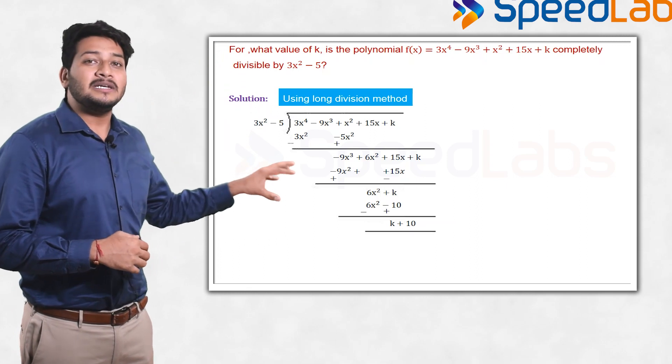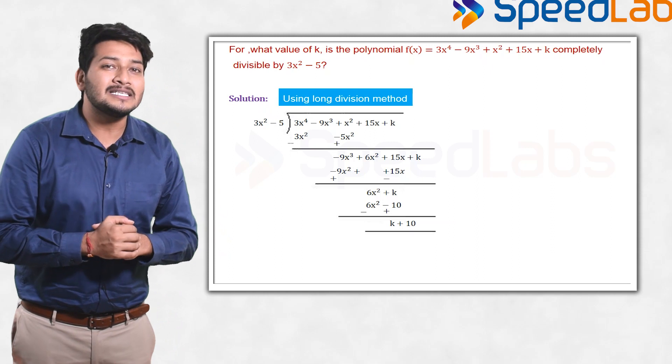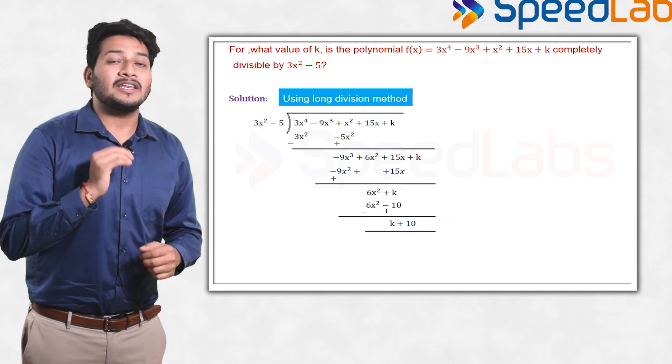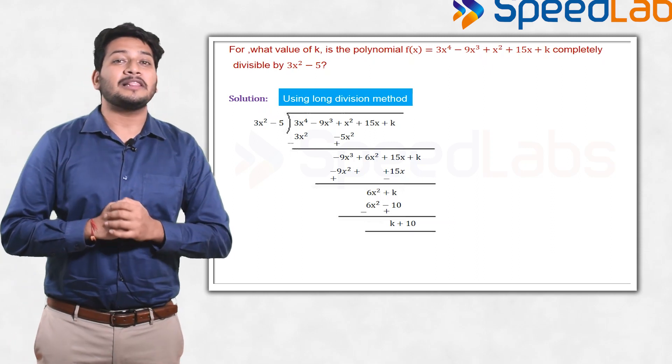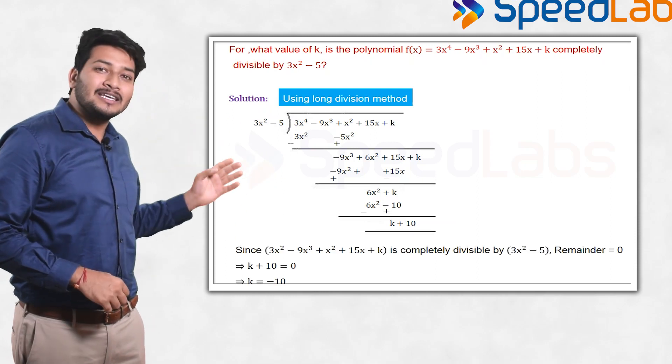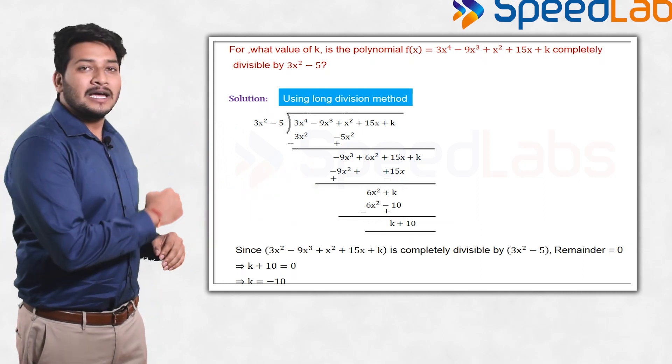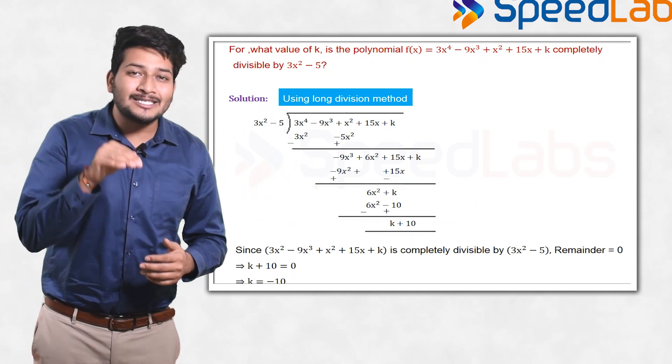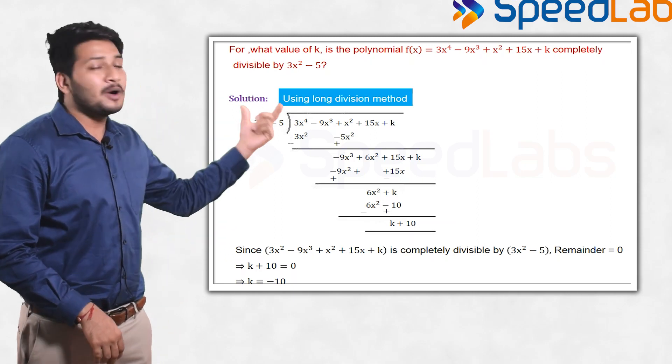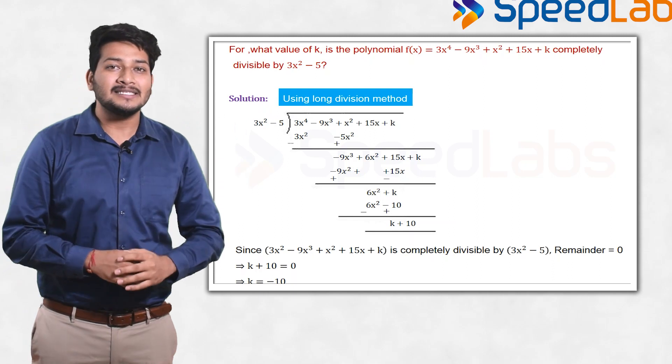In this question, the remainder you get is k plus 10. Completely divisible means what? The remainder should be zero. So if you equate k plus 10 to 0, it comes out to be minus 10. So if k is minus 10, then the given polynomial is completely divisible by 3x² - 5.